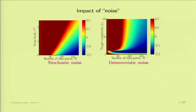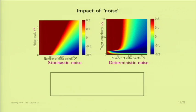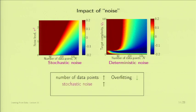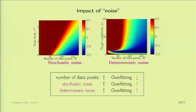Looking at both plots together: first, if I have more points, I have less overfitting—moving to larger N makes things bluer in both plots. Second, if I increase the stochastic noise energy, overfitting goes up—going to larger sigma squared makes things redder. Finally, with deterministic noise—associated with increasing target complexity—overfitting also increases. Going to higher Q_F also makes things redder, though it's more subtle. So both types of noise increase overfitting.